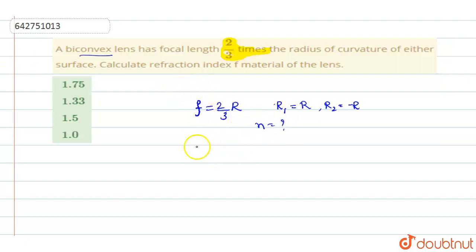Applying lens maker's formula, you will get the equation as 1 by f is equal to n minus 1 into 1 by r1 minus 1 by r2.